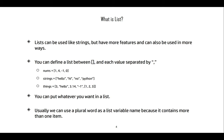Lists can be used like strings but they have more features and can be used in more ways. We define a list using square brackets and separate each value with a comma. For example, nums is equal to the list [1, 4, -1, 0]; strings is the list ['hello', 'hi', 'no', 'python']; and things is a list containing 3, 'hello', 3.14, -1, and another list [1, 2, 3]. You can put whatever you want inside a list.